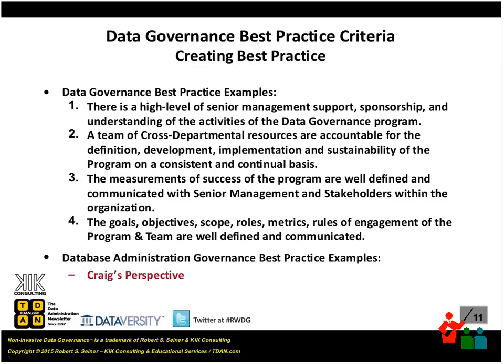The fourth best practice is a laundry list: goals, scopes, objectives, roles, metrics, rules of engagement, and team are well defined and communicated. You can do it by reading a book — mine, Craig's, or someone else's. But somebody has to have the responsibility for doing that. If you don't, someone at some point is going to want to know what the goals of your governance program are, what the objectives or scope are.